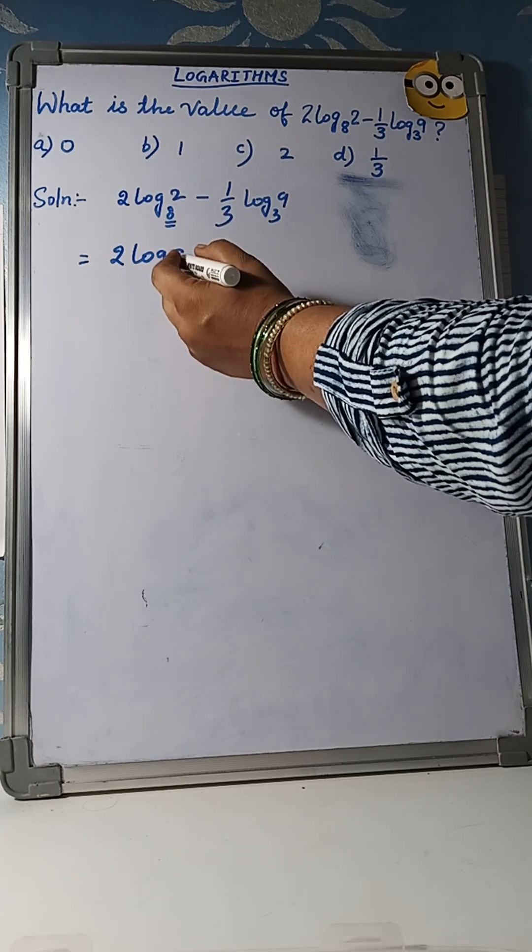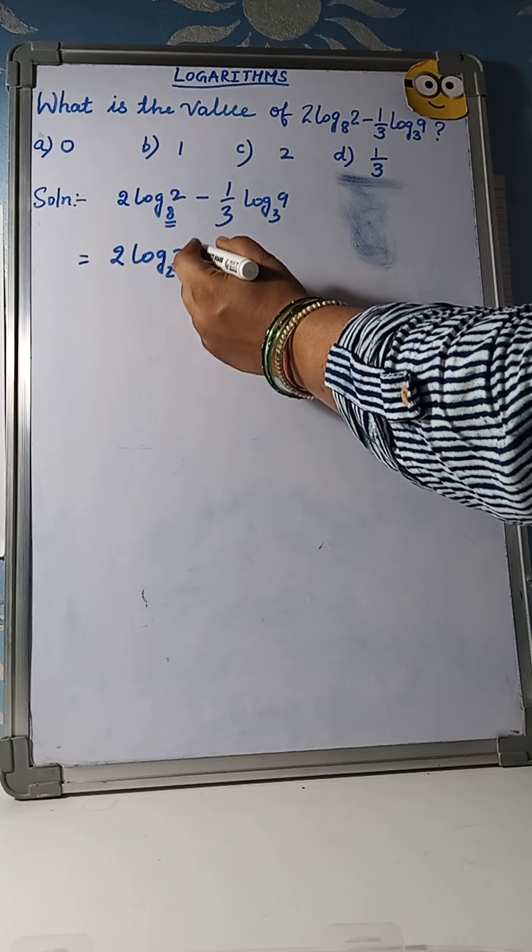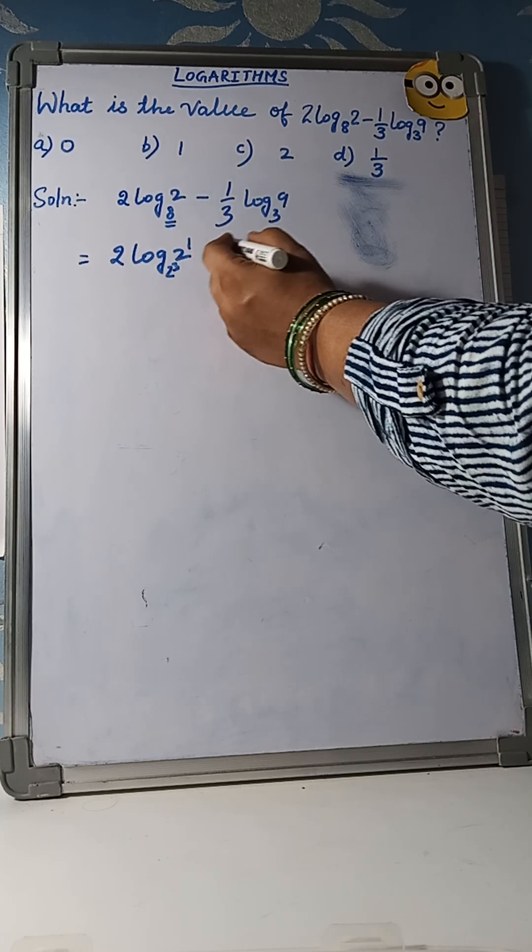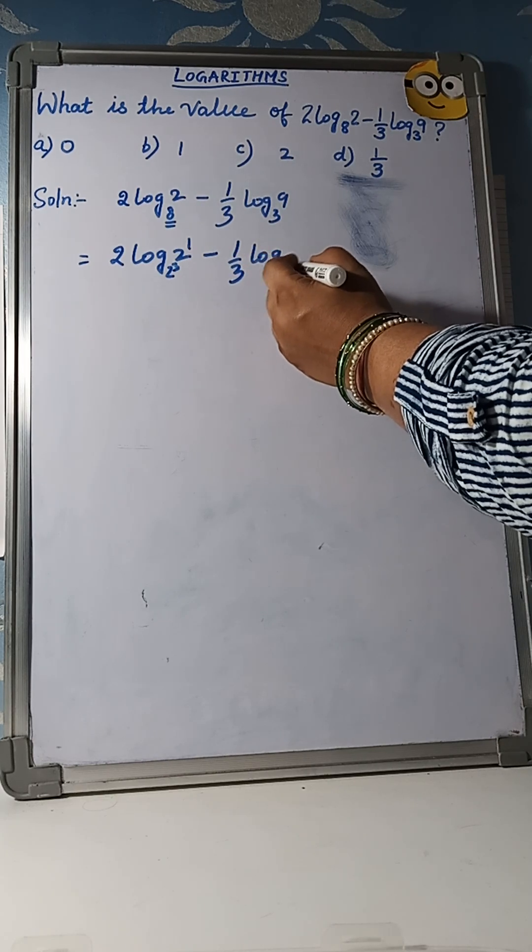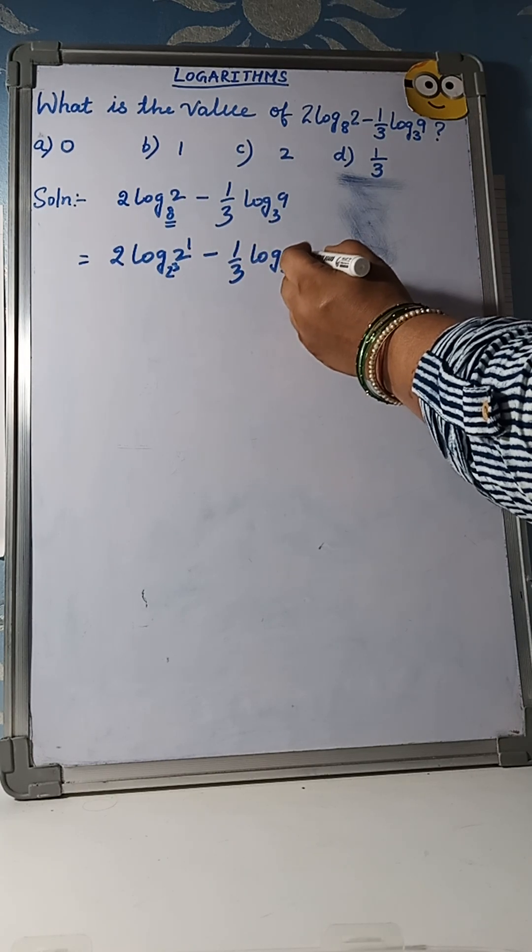you can write this 8 as 2³ and this will become 1. 1/3 log base 3 and 9 you can write as 3².